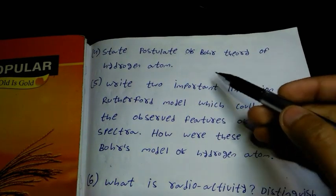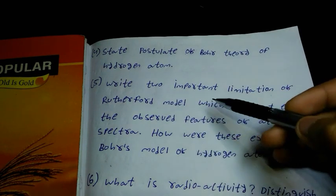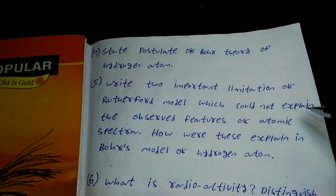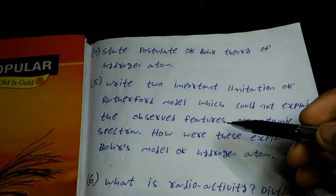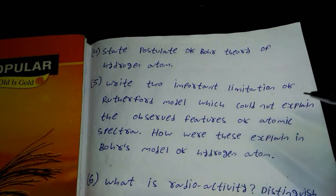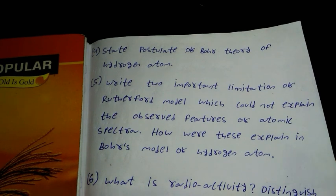Number 4 question is state postulates of Bohr's theory of hydrogen atom. Number 5 question is write the input and limitation of Rutherford model which could not explain the observed features of atoms. How are these explained in Bohr's model of hydrogen atom?